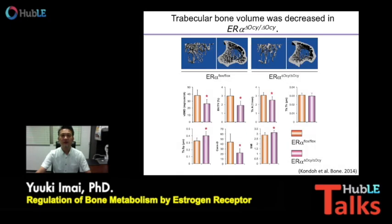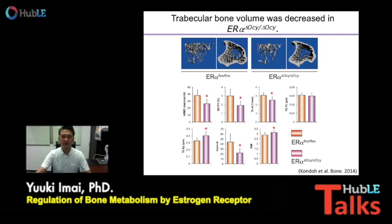In addition, we also reported that female, not male, osteocyte-specific ER alpha knockout mice exhibited trabecular bone loss with reduced osteoblastic bone formation. Genome-wide gene expression analysis revealed that ER alpha in osteocytes can control the expression of Wnt antagonists to regulate osteoblastic bone formation.